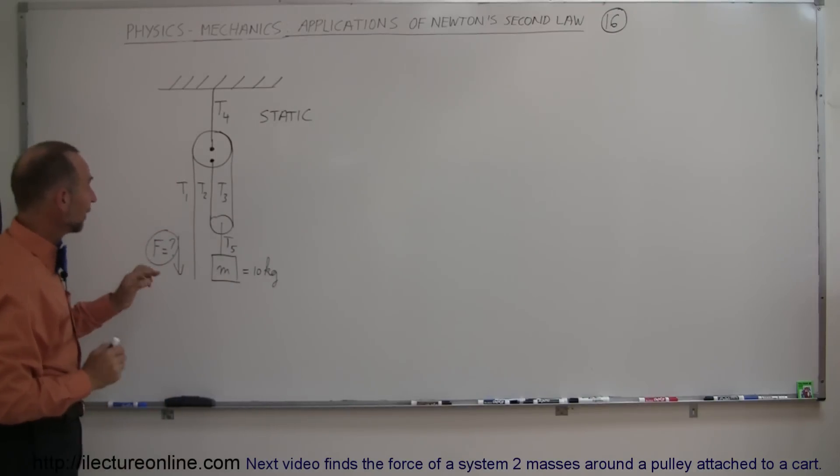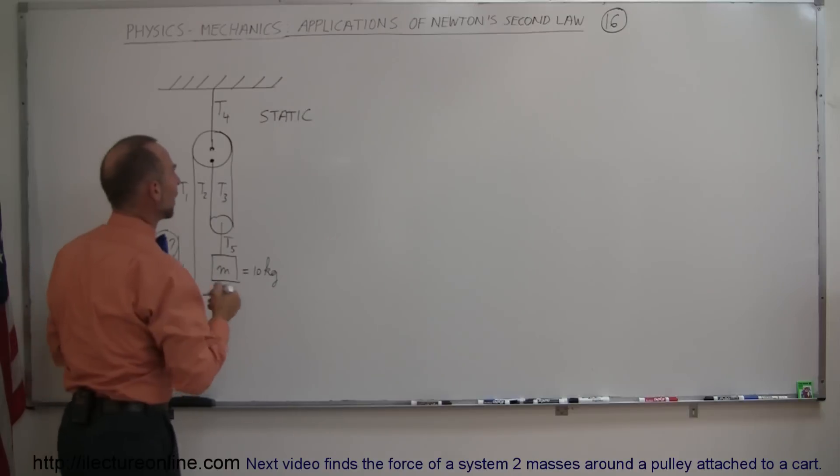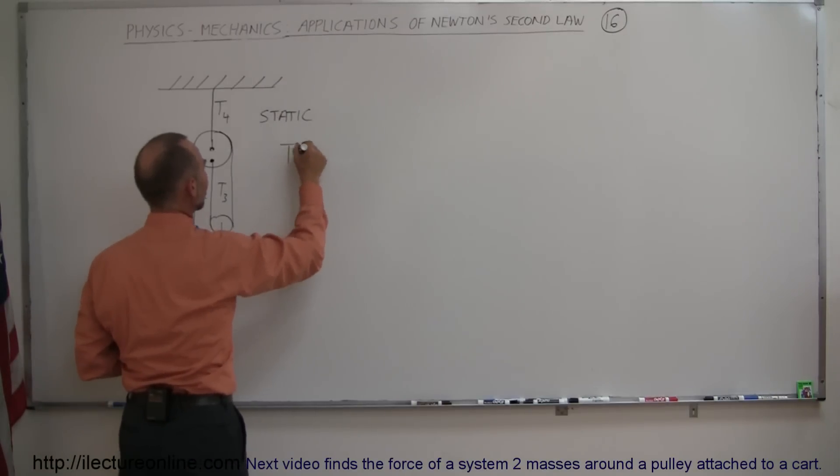Now notice that T1 and T3 have to be equal to each other because it's one continuous string going over a single pulley and the distance from the center of the pulley to here is the same as the distance from there to there. Since the distances are the same, the tensions must be the same. So we can say safely that T1 equals T3.